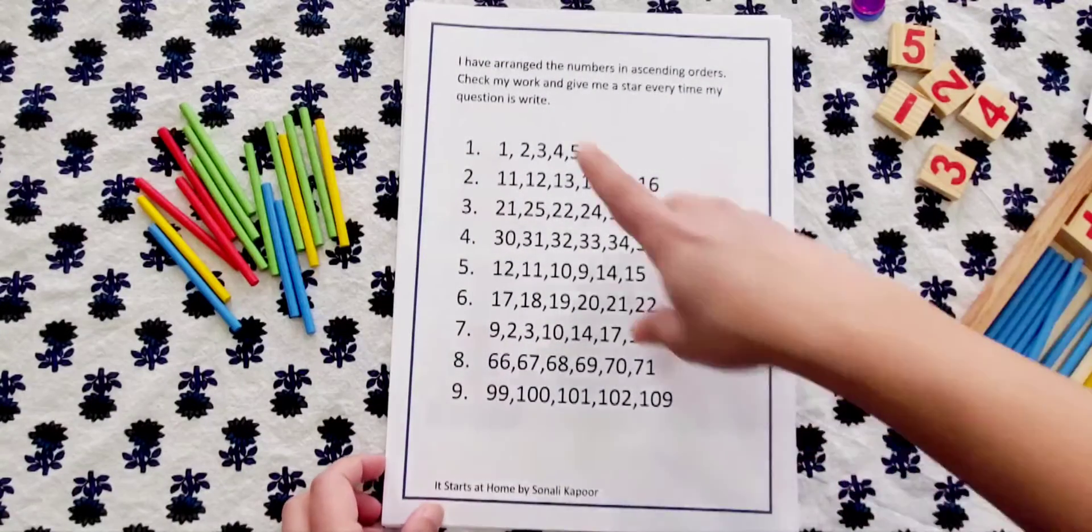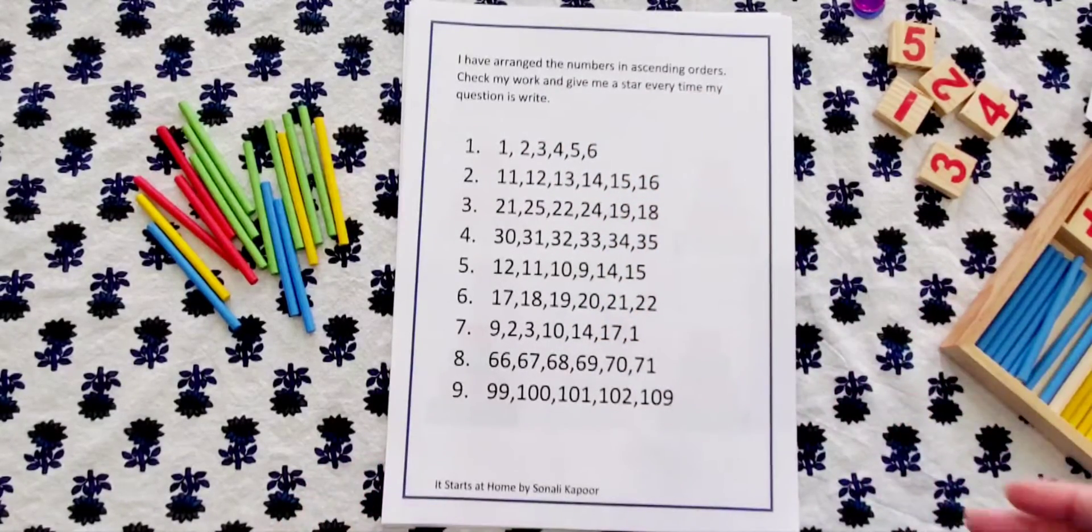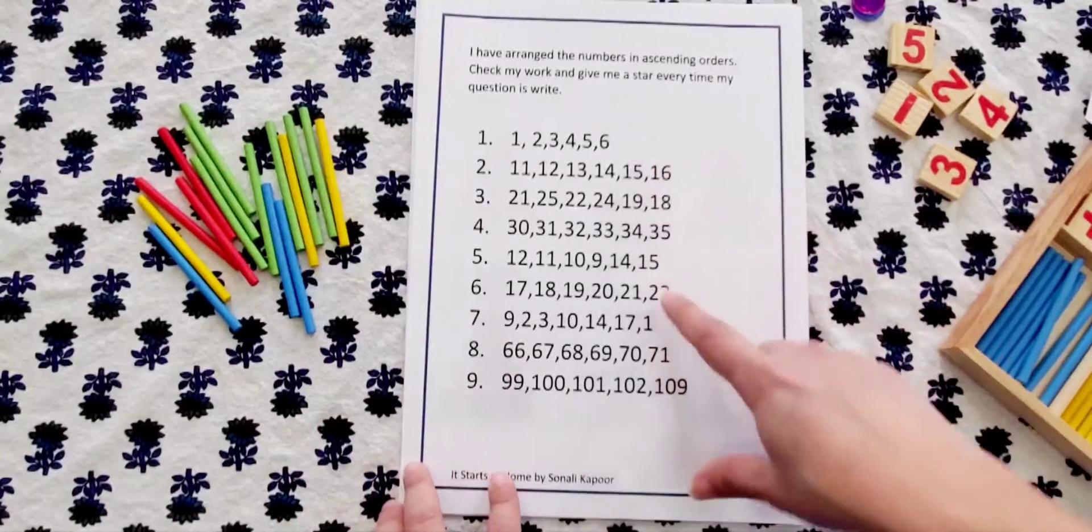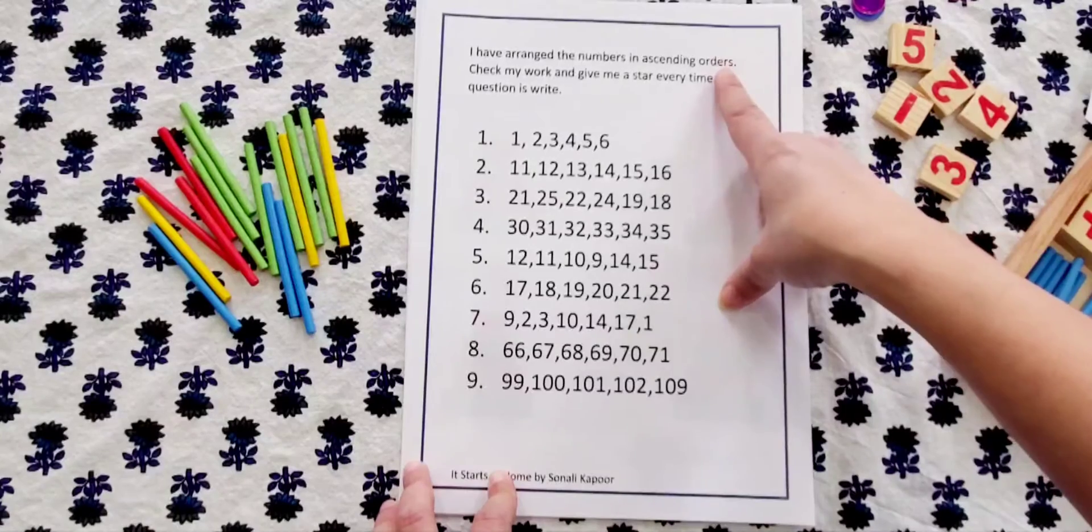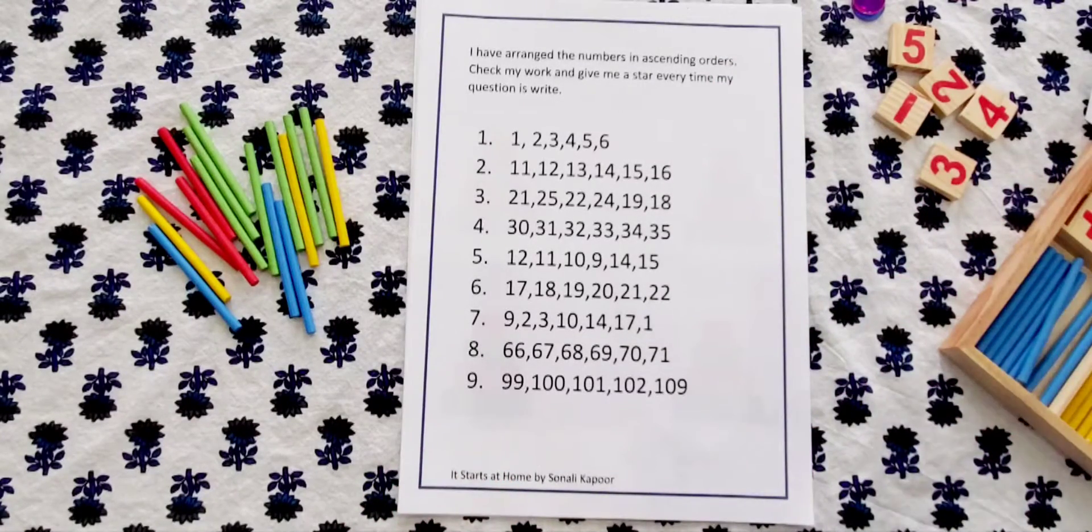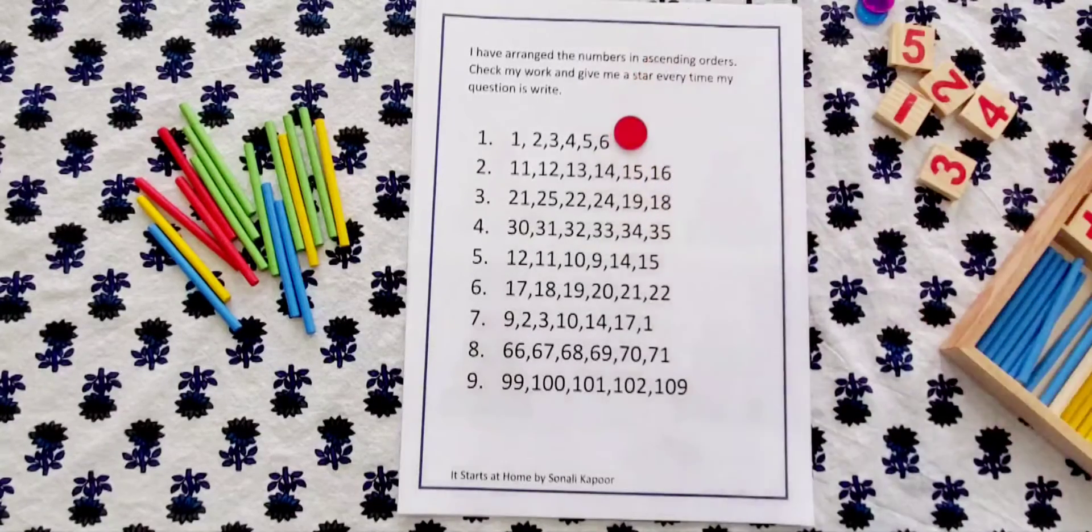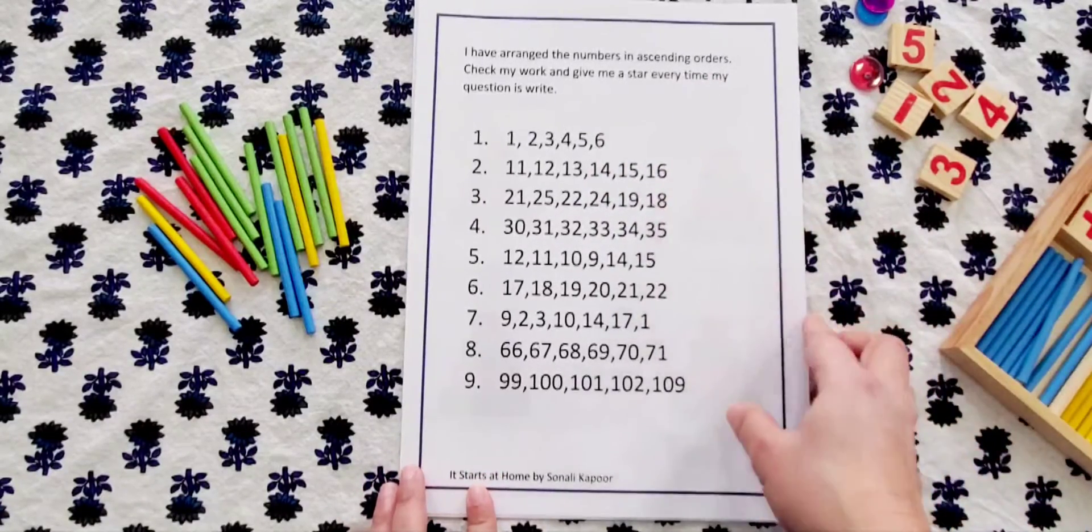I have arranged the numbers in ascending order, check my work and give me a star every time a question is right. So in this what you need to do is the numbers, each one they have been organized according to the person as ascending. If you think that is ascending and it's absolutely right, then you give me a star or you give me a circle or you give me a tick, but if it's not you would need to just give it a cross.